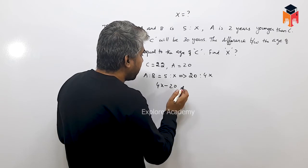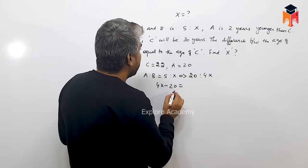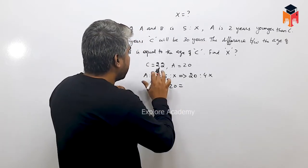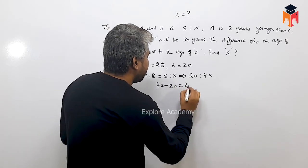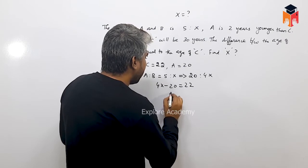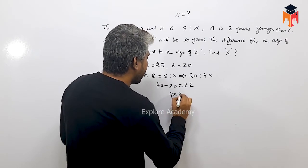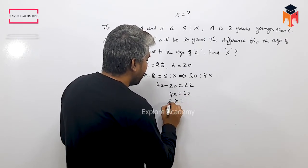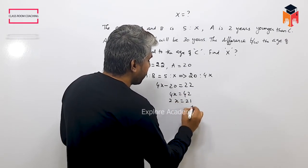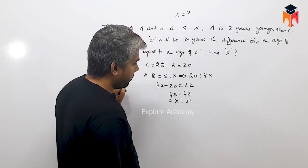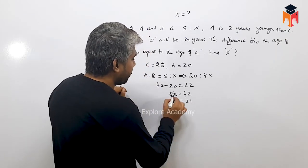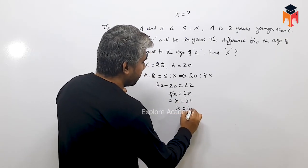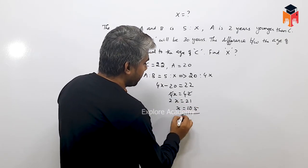4x minus 20 equals C's age, which is 22. So 4x equals 42, meaning x equals 10.5. This is the result, though note it is not a whole number.